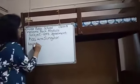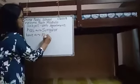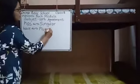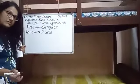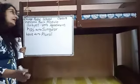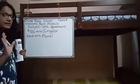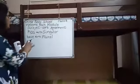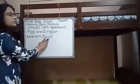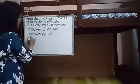'Have' is used with plural nouns or pronouns. For example, 'We have a beautiful house in Mumbai.' So, 'have' is used with plural nouns or pronouns.